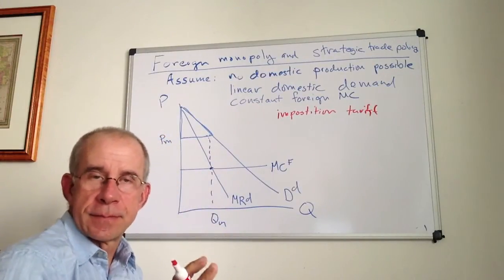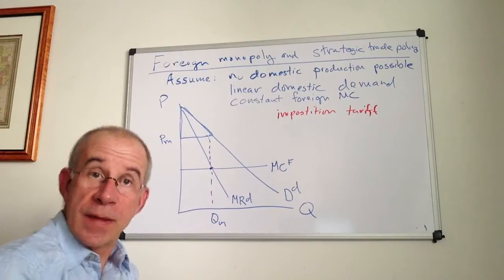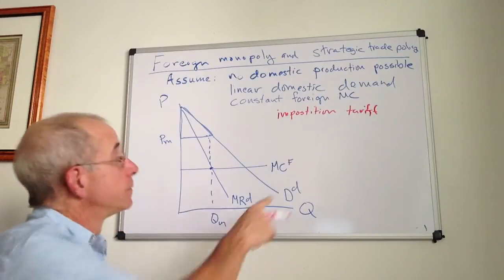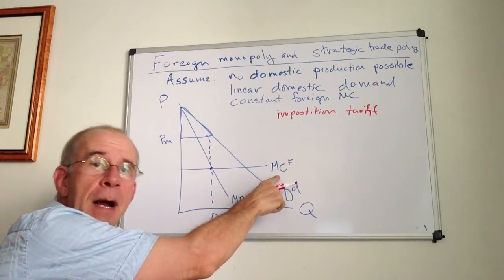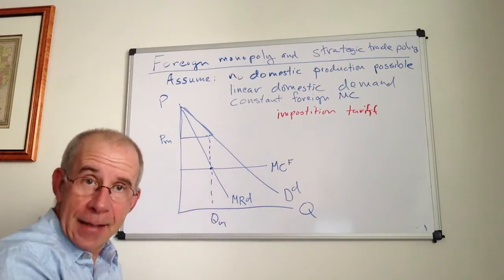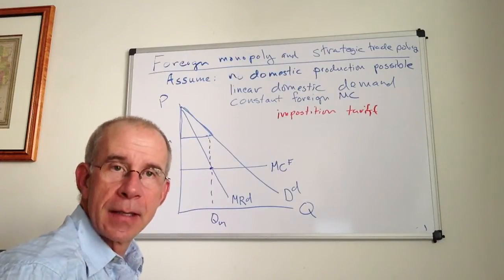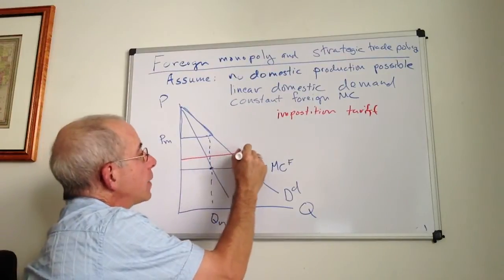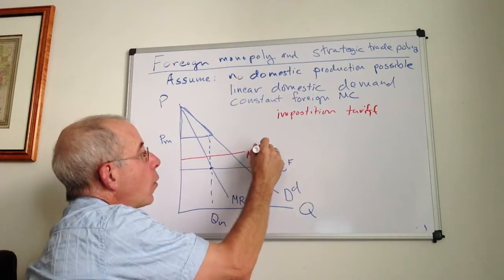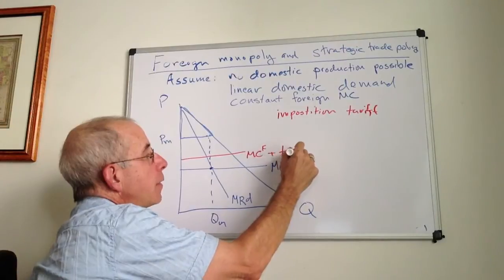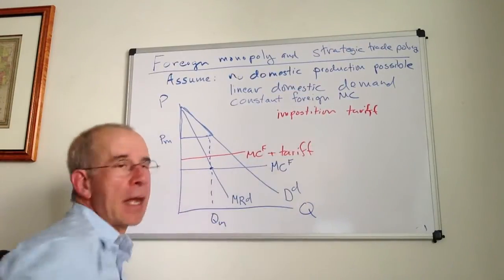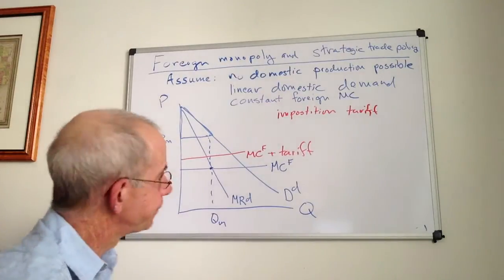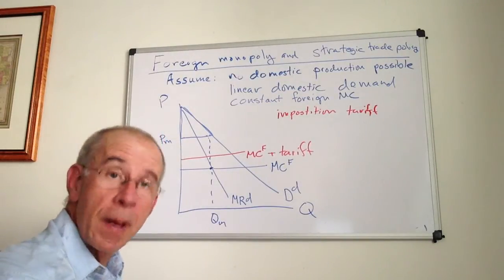So from the foreign monopolist, their decisions are changed in the following way. They have their own domestic marginal costs of production. To operate in this market, they've got to pay that, and they've got to pay the tariff. So the foreign marginal cost plus the tariff is the relevant cost for the foreigner from operating in this market. Okay, so they will respond accordingly.